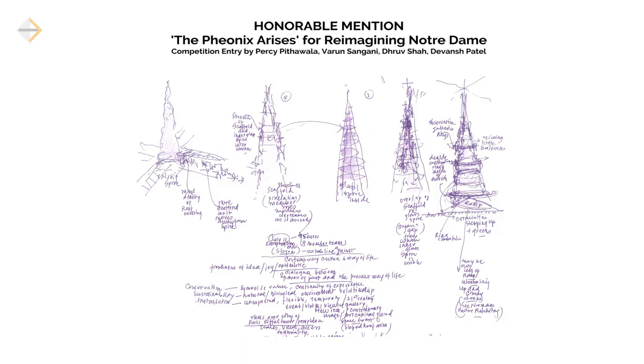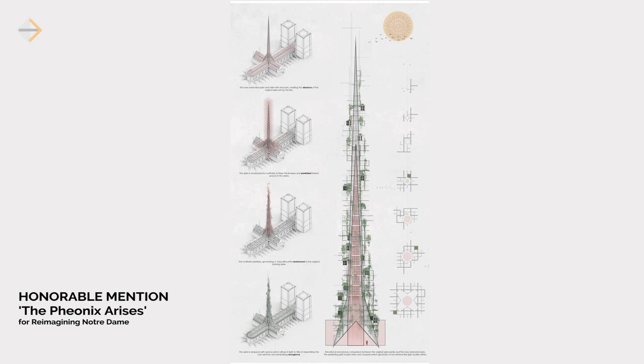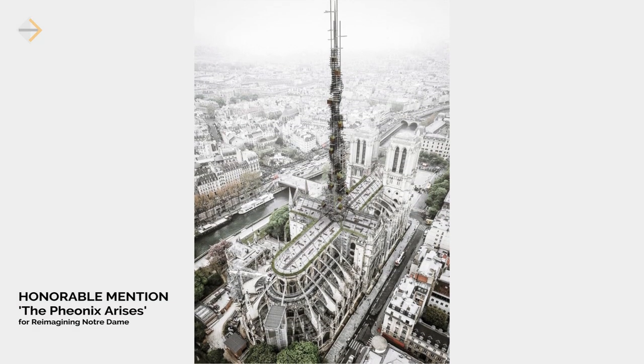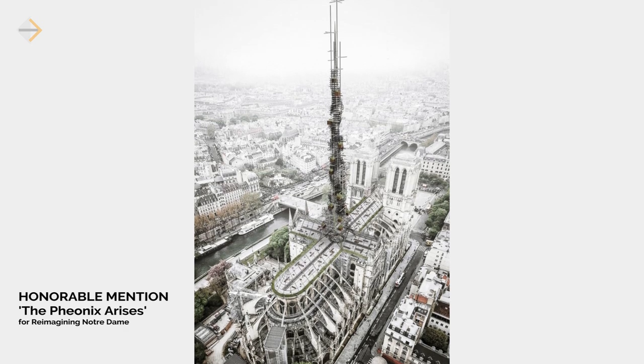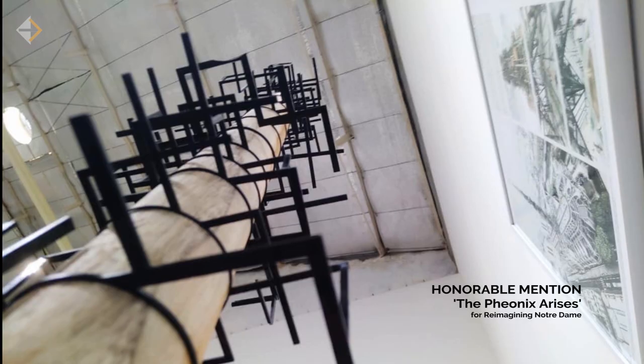We feel that catastrophic events are happening more and more because of climate change, and there needs to be a way to preserve works of art — so going underground seemed like a better alternative. The other competition we were very passionate about was reimagining the spire lost in the Notre Dame Cathedral fire. We explored the notion of presence and absence, representing the lost spire's silhouette through a pixelated form that would eventually be covered with green over time, making a new icon for the city of Paris.